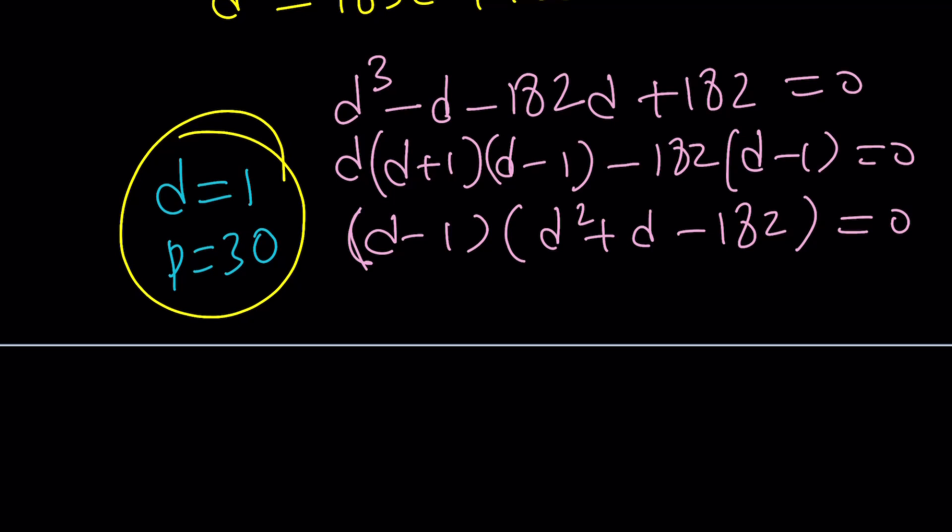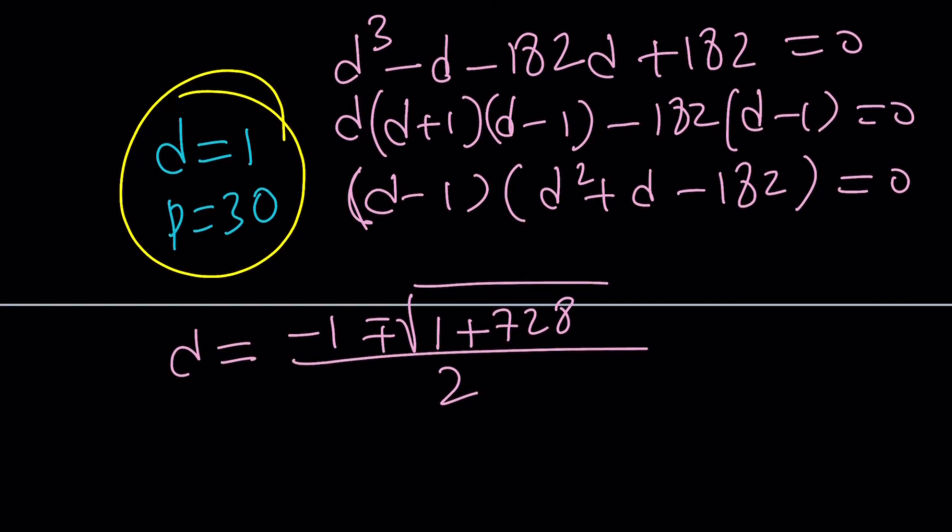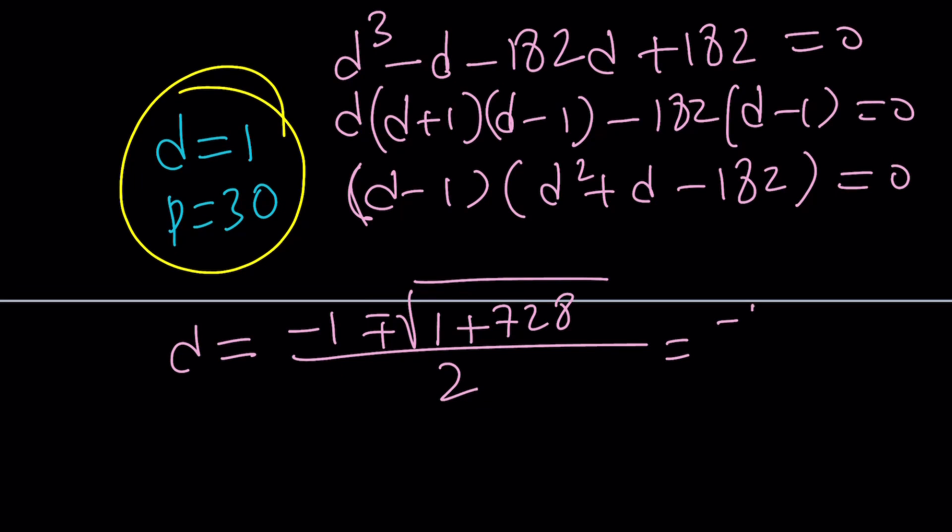But if you find the other solutions, you're going to find something like this. Negative b plus minus the square root of b squared, which is 1, plus, because negative 4ac. That's going to be 728. Uh-oh. This is interesting because, you know what? 729 is 27 squared. Awesome. So this can be written as negative 1 plus minus 27 divided by 2. And if you go with the plus sign, you're going to get d equals 13. And if you go with the minus sign, you're going to get negative 14.